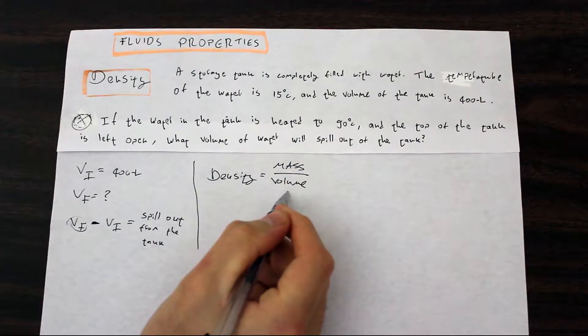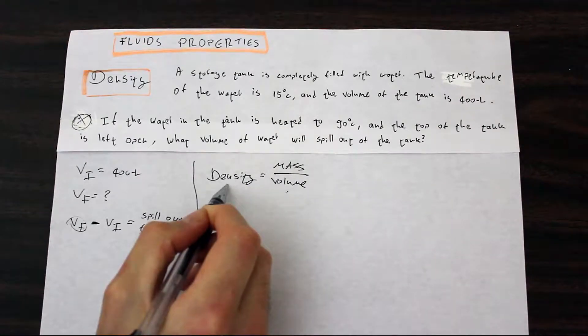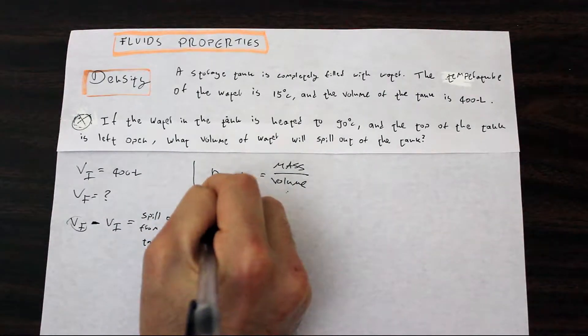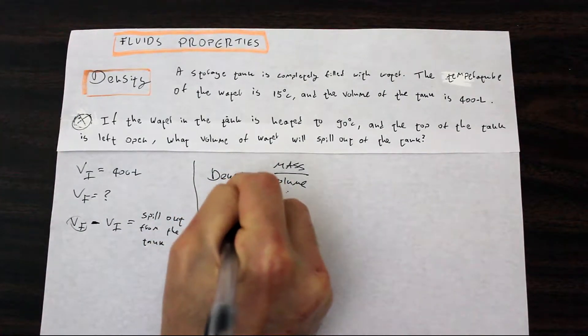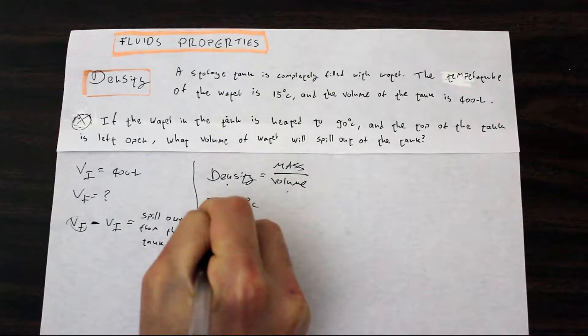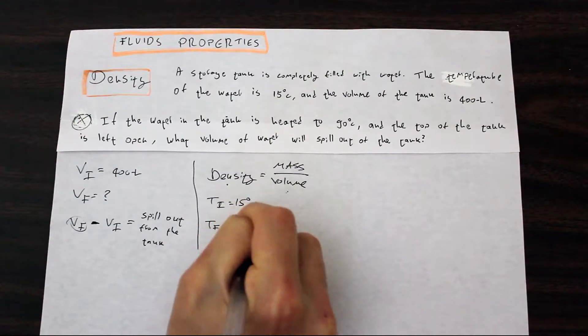We have our initial volume, we want to find our final volume. What about density? In order to find the density, in the question they are giving us two temperatures. They are giving us the initial temperature, which is 15 Celsius, and the final temperature, which is 90 Celsius.